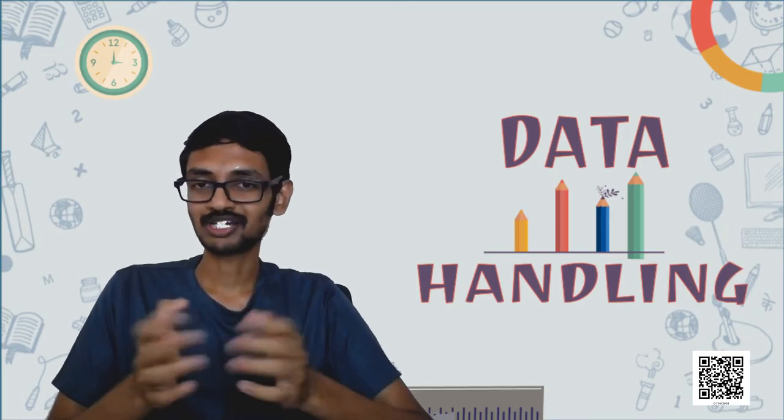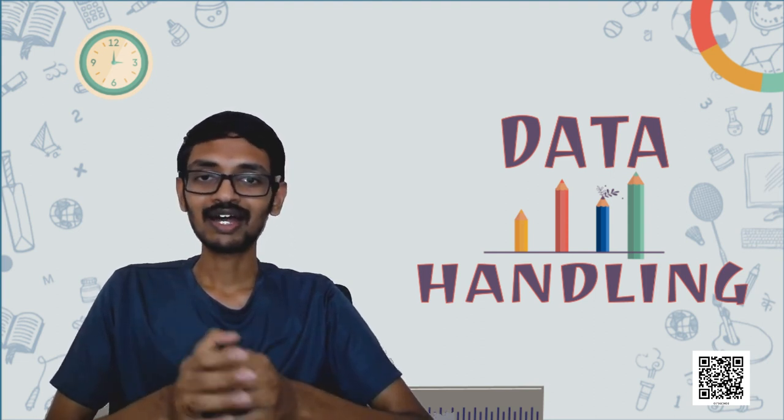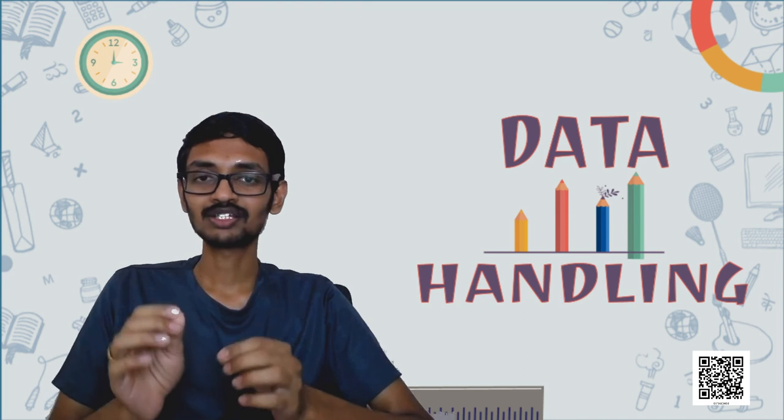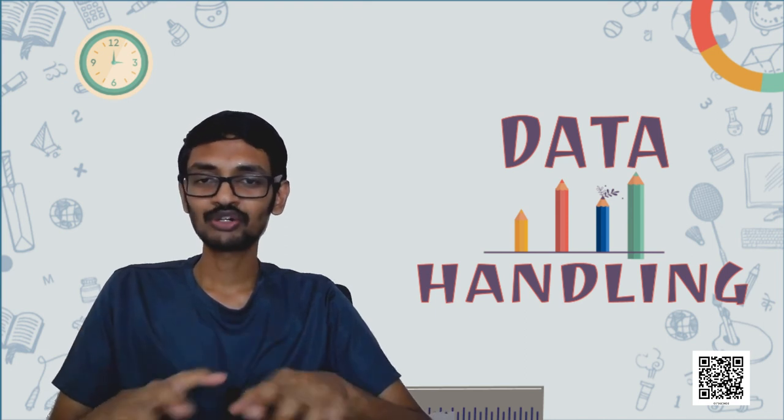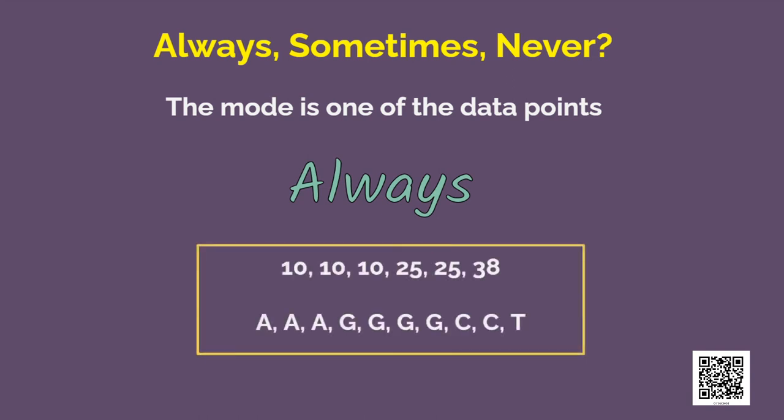Now, I will show you some statements. I want you to look at it, think and tell whether that statement is always true or never true or only sometimes true. The mode is one of the data points. Always, isn't it? Let us look at examples. We know that mode is the most occurred data point in a group of data. So, it always has to be one of the data points.